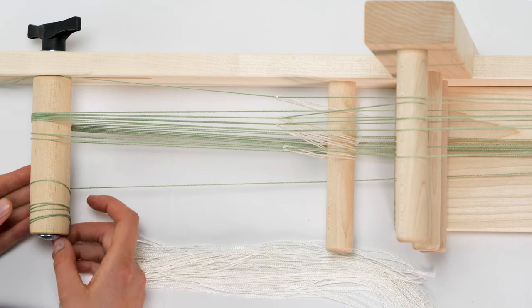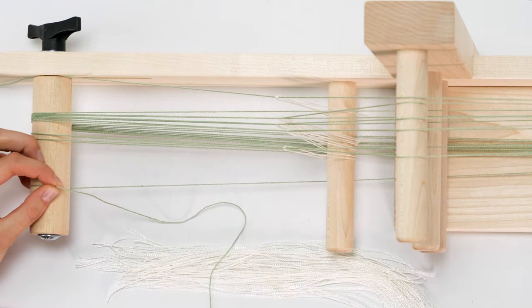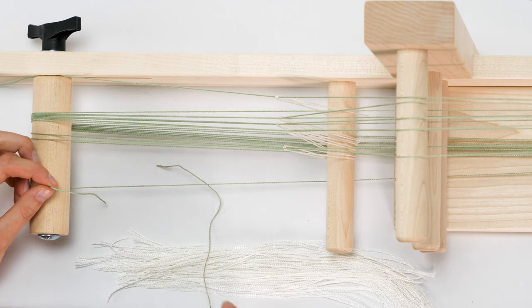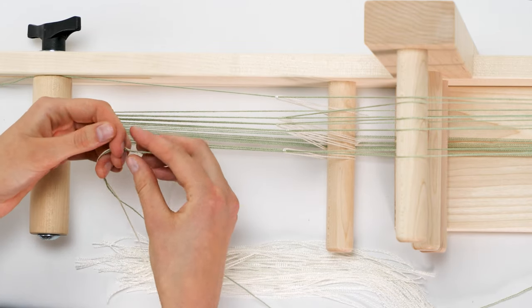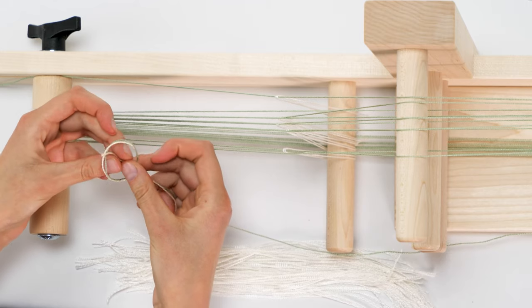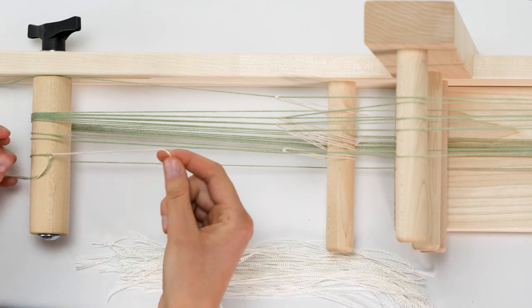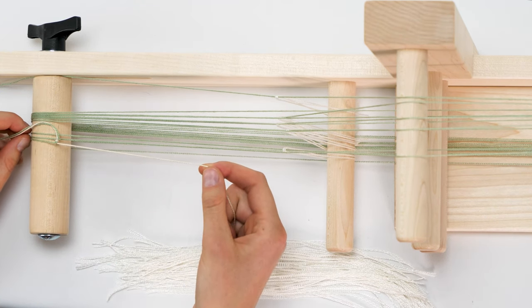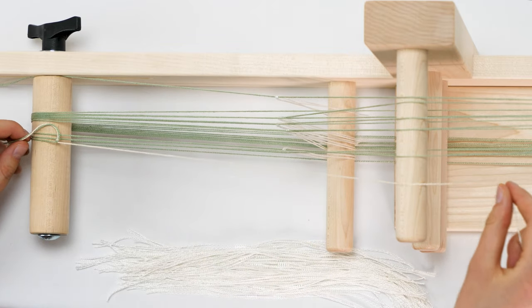When you're ready to change colors, do so at the tension peg. Cut off the previous color so that there is about a 3-inch long tail. Then tie an overhand knot with a new color. Try to keep all your knots within about an inch of each other. This will give you more warp to weave. Continue winding following the draft and switching colors as needed.